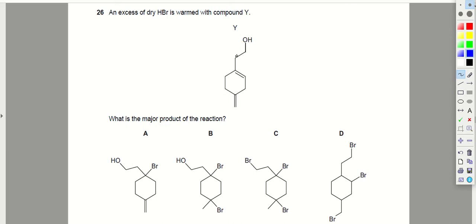March 2020, question paper 1-2, question 26. A compound Y is warmed with excess of dry HBr. This is a molecule of Y.